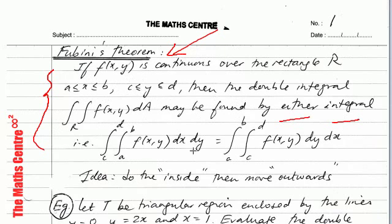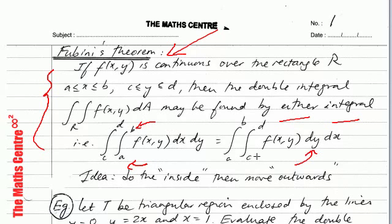The double integral may be written as F of x, y dx dy, or F of x, y dy dx. Take note: when you write dx first, the inner limits will be the values of x and the outer limits will be the values of y, C and D. If you write dy first, then the limits C and D correspond to y. Fubini's theorem is defined for a rectangular region, but it also holds for non-rectangular regions as well.